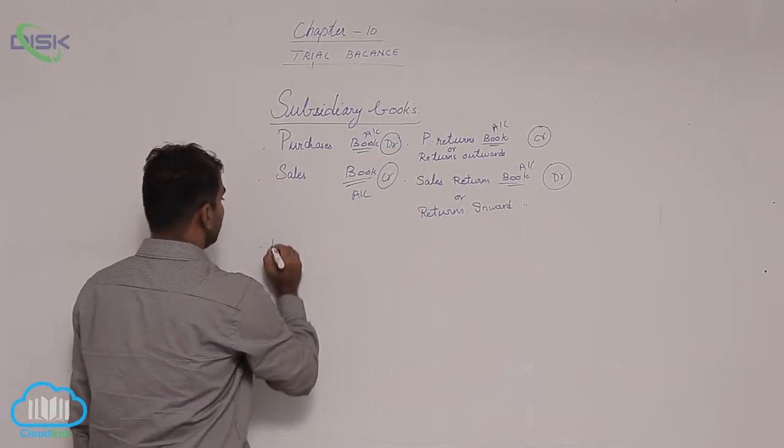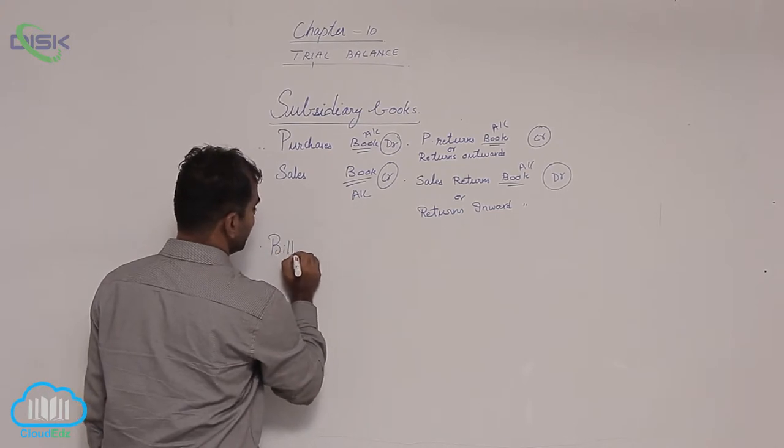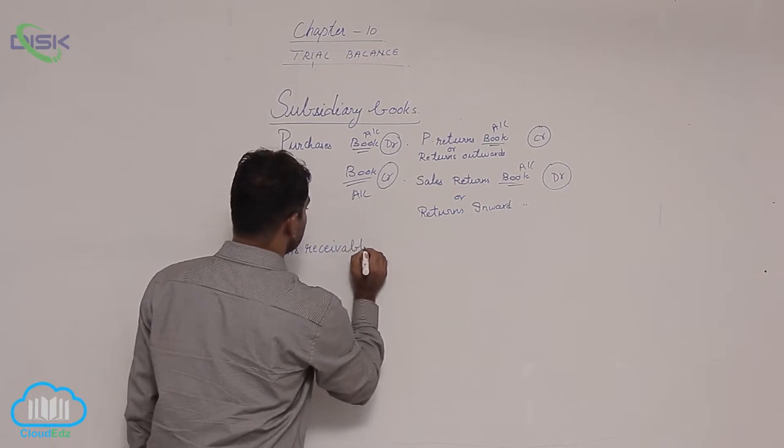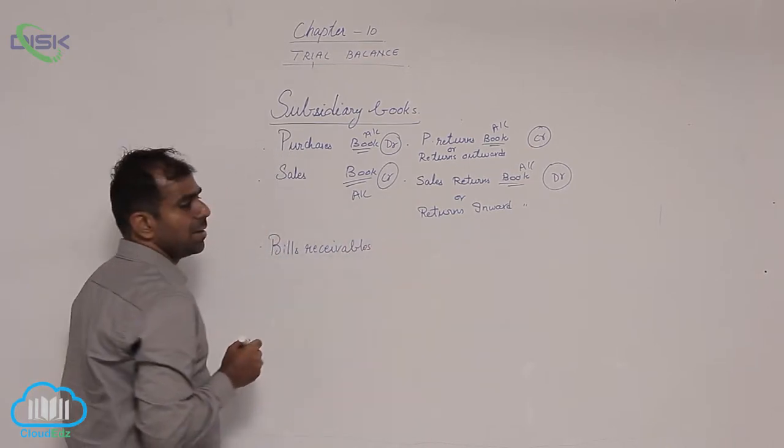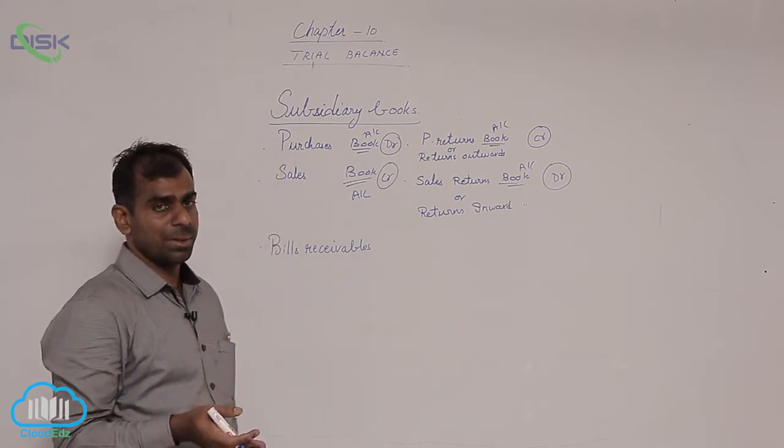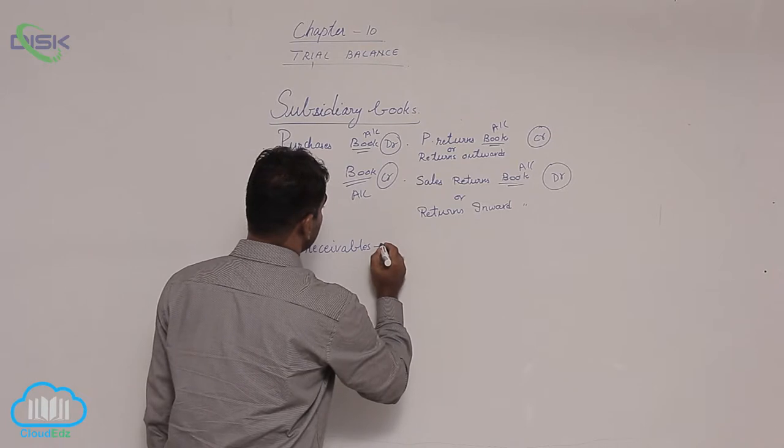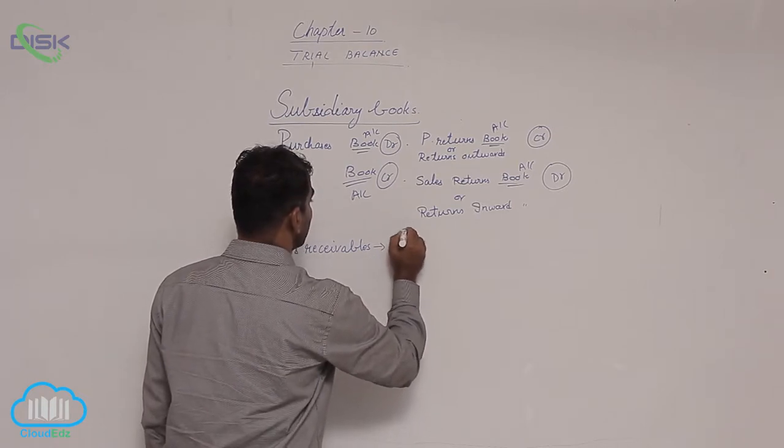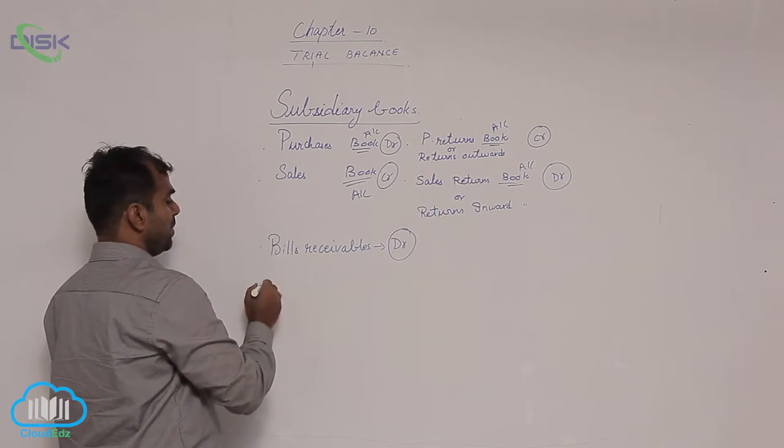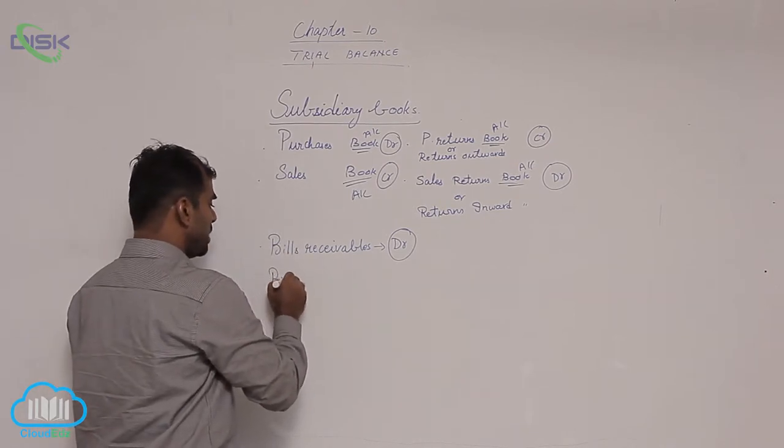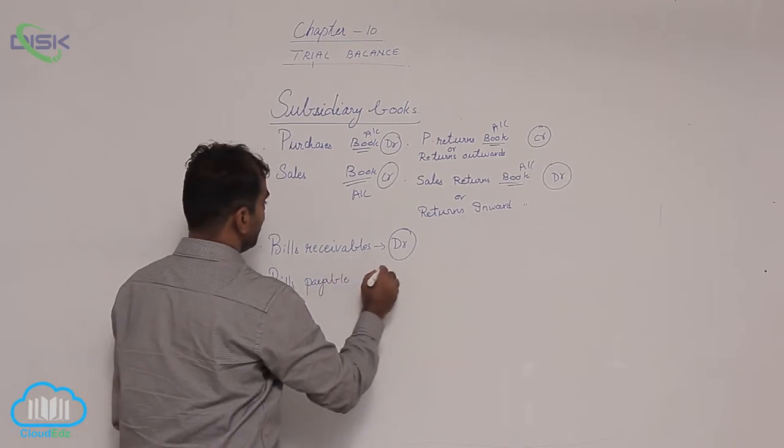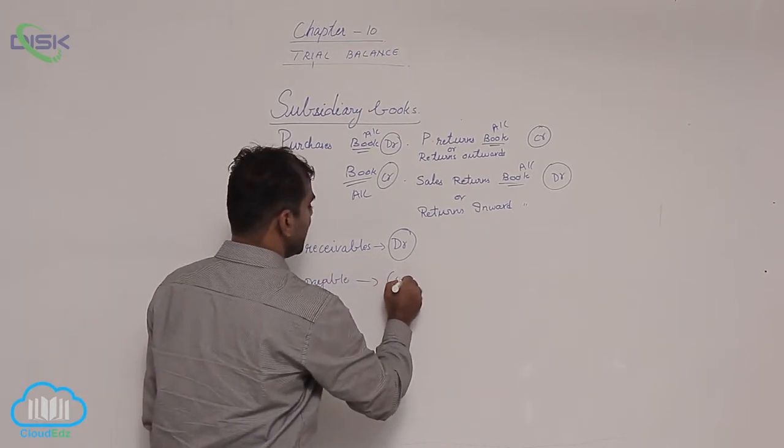Further going ahead, you remember bills receivable. Bills receivable represents the amount receivable from people for which they have executed a document in writing. This bills receivable show debit balance because you will receive money. Opposite would be bills payable, they show credit balance.